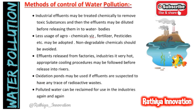Next, methods of controlling water pollution. Mostly, industries produce effluents. The waste water from industries should be treated before release. Industrial effluents should be filtered and released in a proper manner.